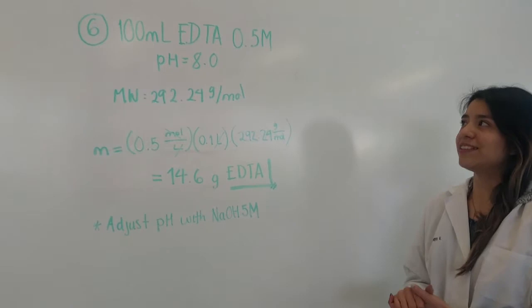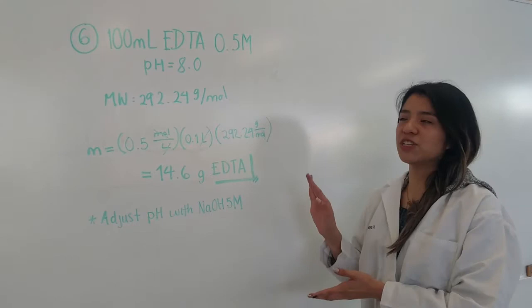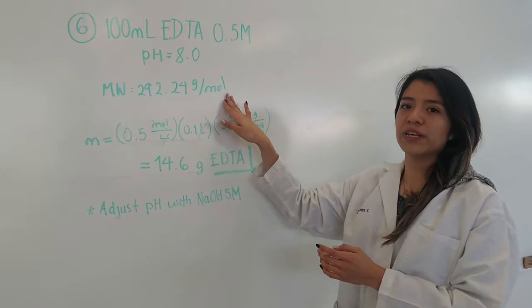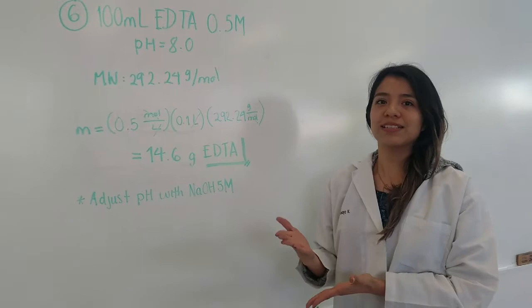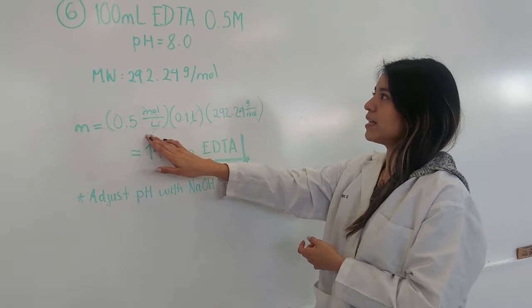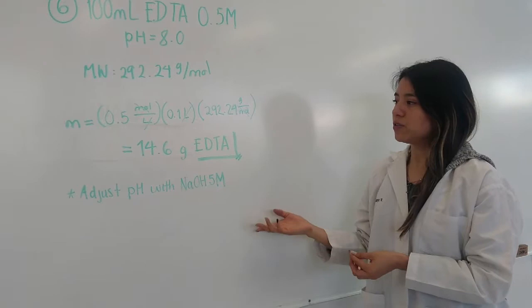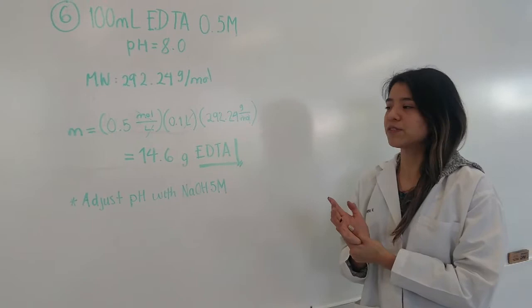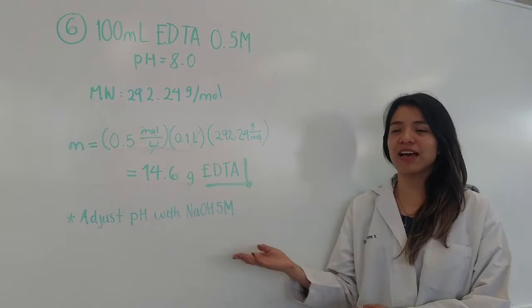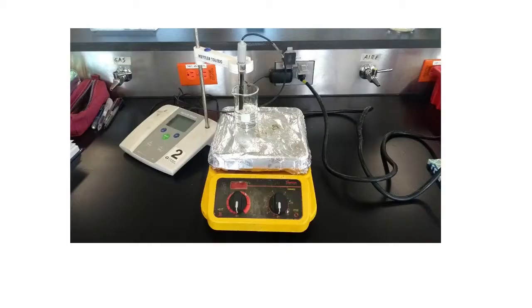For the final solution, we prepare EDTA at 0.5 molar concentration, which also requires pH adjustment to 8. Using EDTA's molecular weight and the molar formula — multiplying concentration by volume and molecular weight — we add 14.6 grams of EDTA to 100 milliliters of distilled water. To adjust the pH of this solution, sodium hydroxide at 5 molar concentration is used.